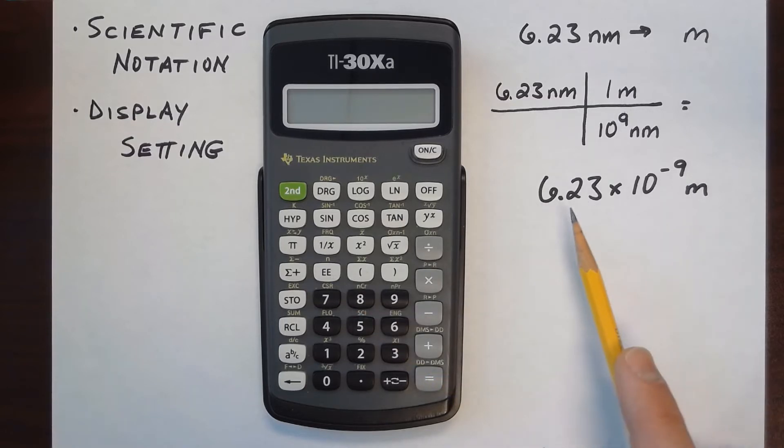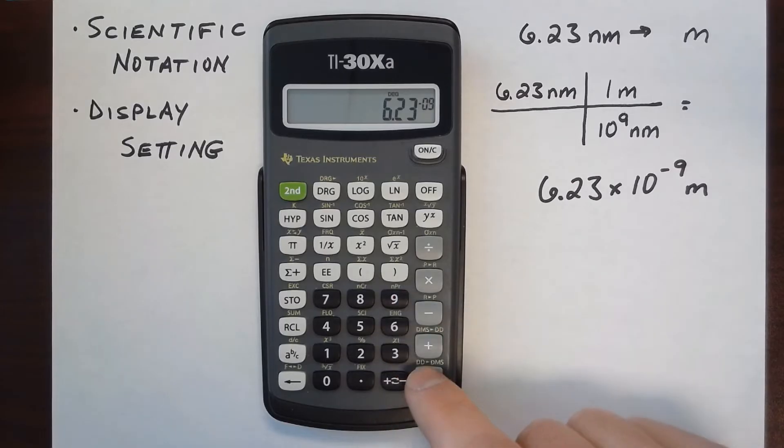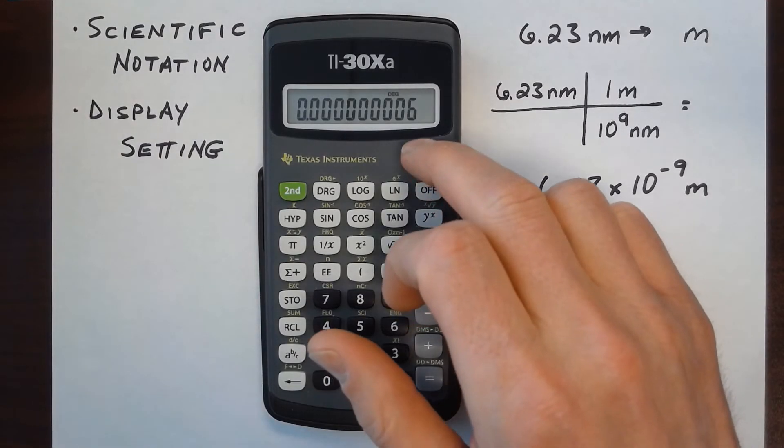So that if you wanted to enter this number right here, 6.23E minus 9 into the calculator, it makes all of this one quantity, so it doesn't multiply the number times 10 raised to some power. It actually connects the scientific notation with the number.